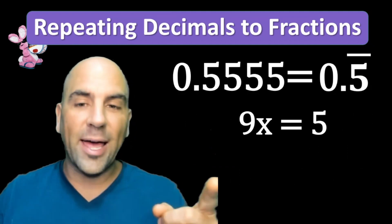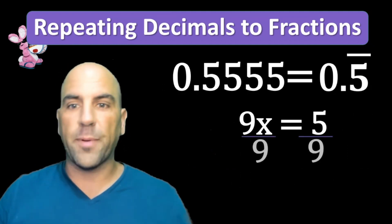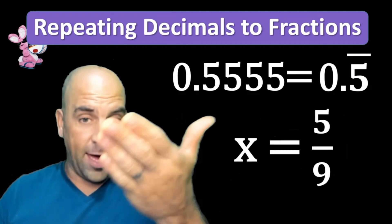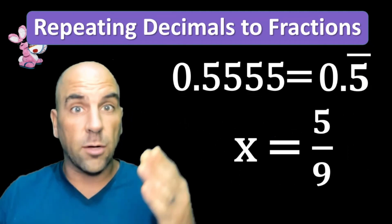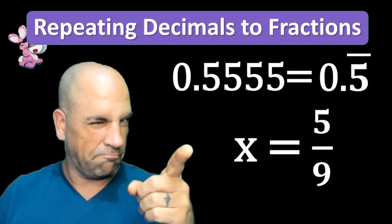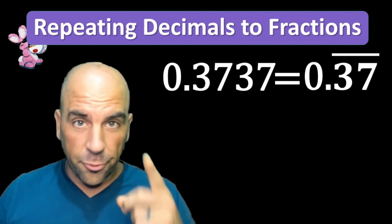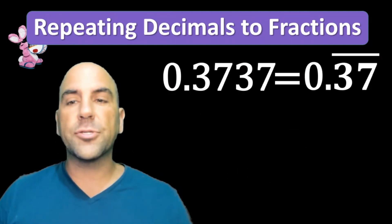Divide both sides by 9 to get x by itself, and you've got x equals 5/9. Five ninths is equal to 0.5 repeating. Next example: 0.37 repeating.